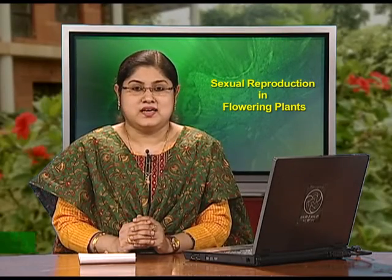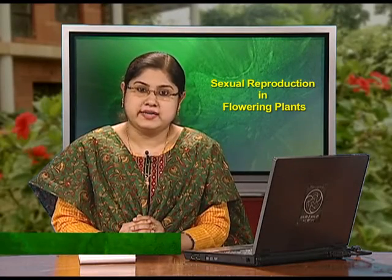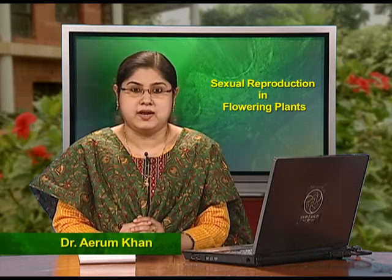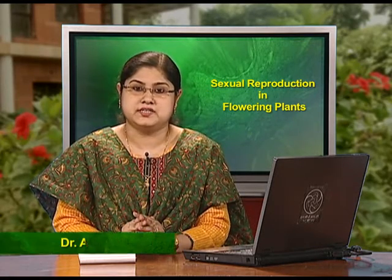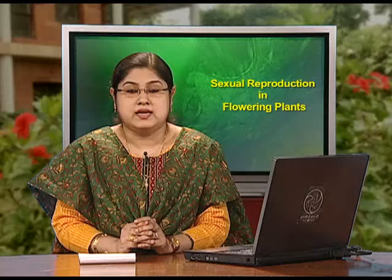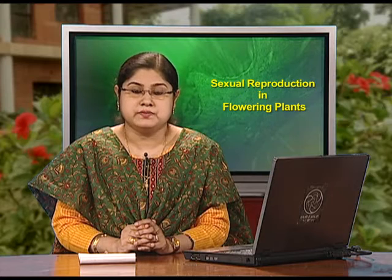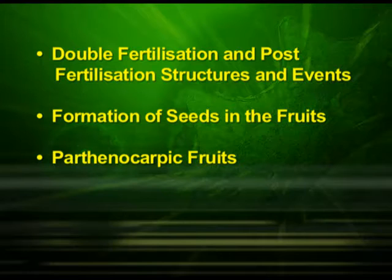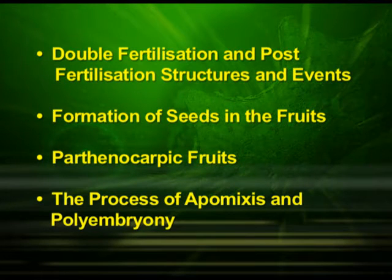Hello dear students. In the fourth and final part of the topic of sexual reproduction in flowering plants, we will cover double fertilization, post-fertilization structures and events like development of endosperm and embryo, formation of seeds in the fruits, parthenocarpic fruits, and the process of apomixis and polyembryony.